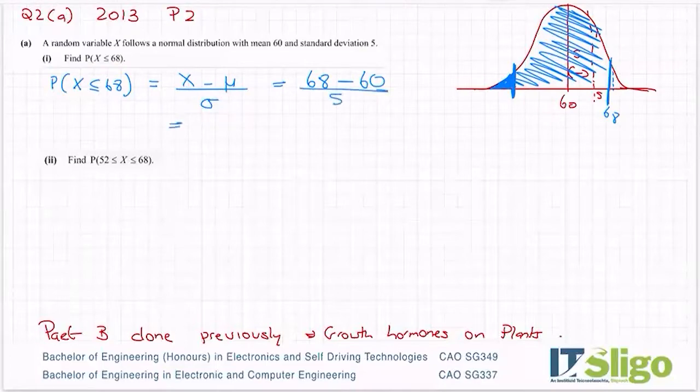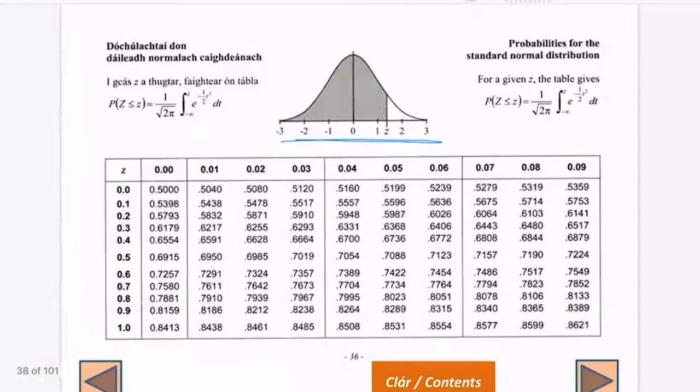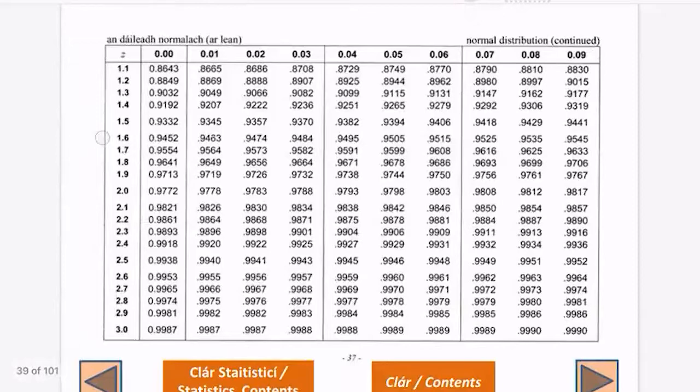And when you put that into the calculator, you get 1.6. So if we look up 1.6 in our z score tables, we are 1.6 standard deviations away. It's exactly 1.6, so it's 1.6. This is our second place of decimal across the top, so 1.60, so 0.9452.